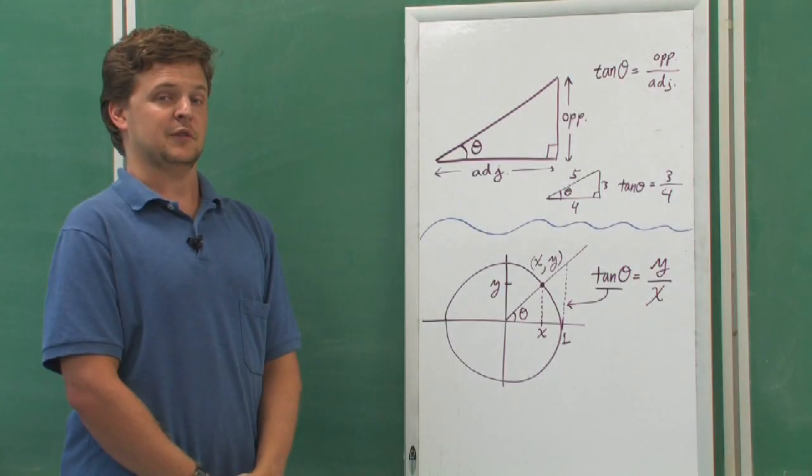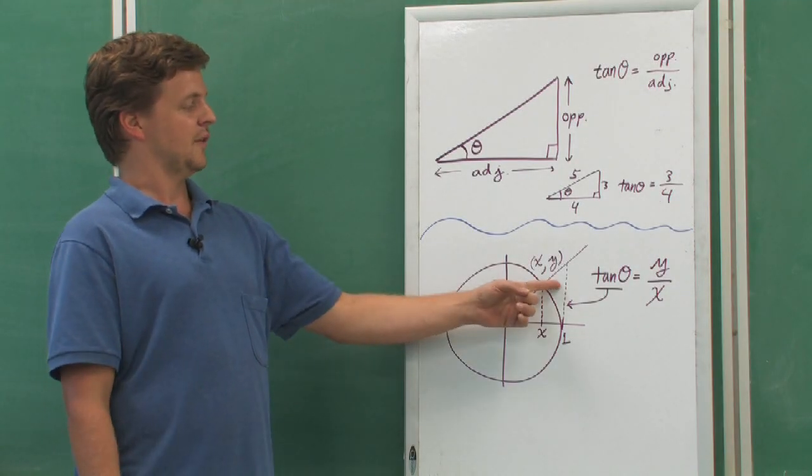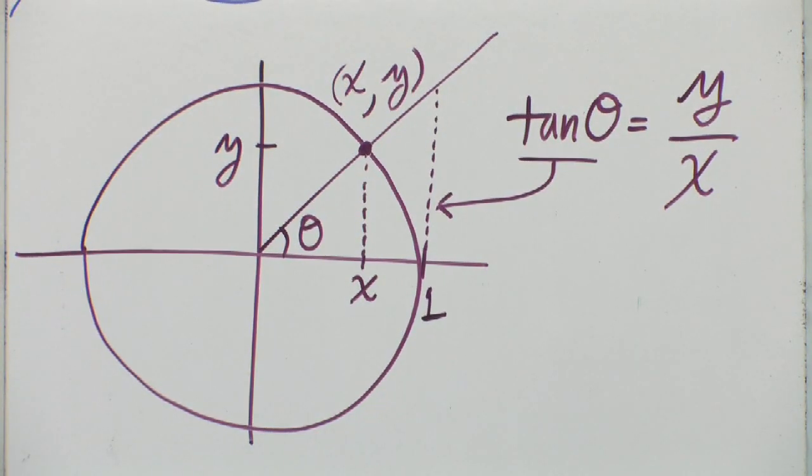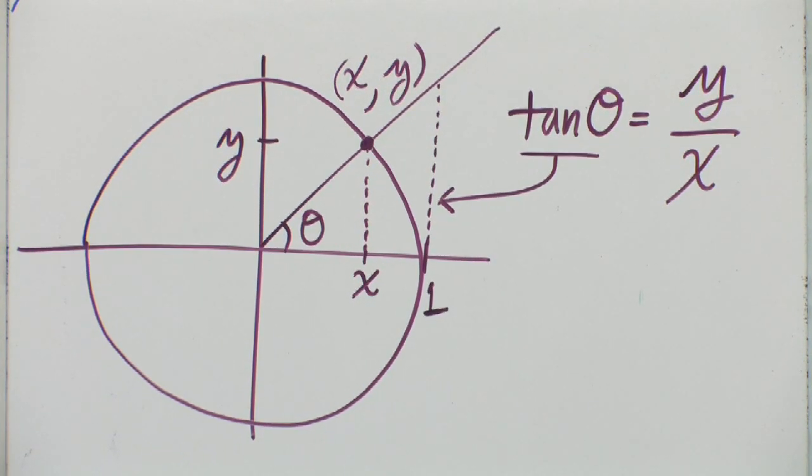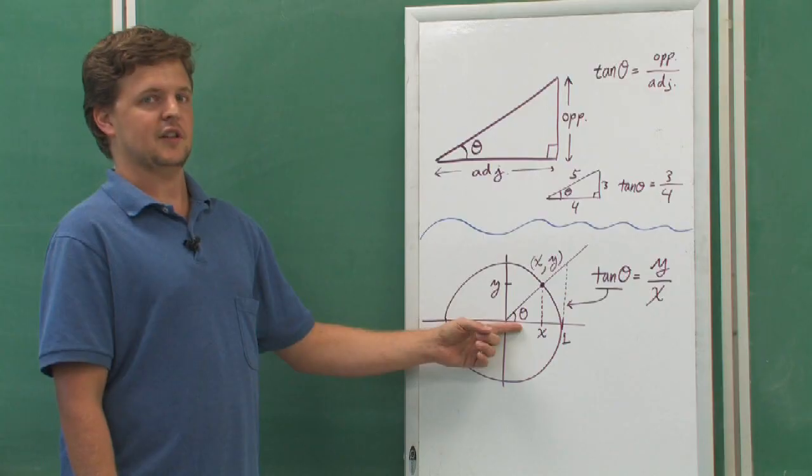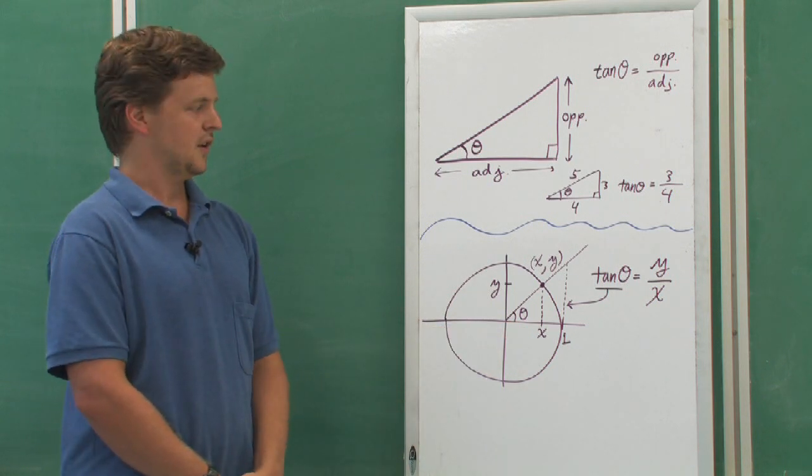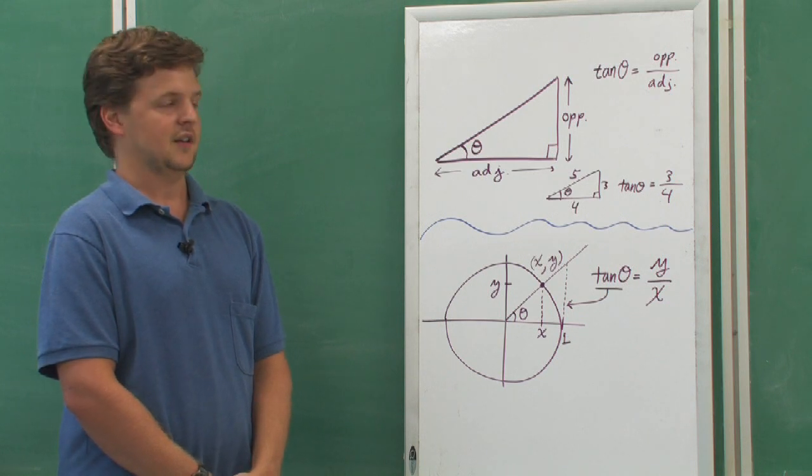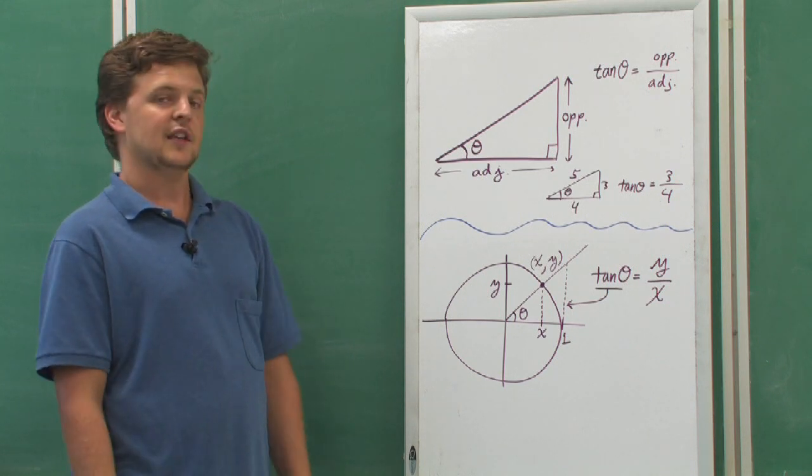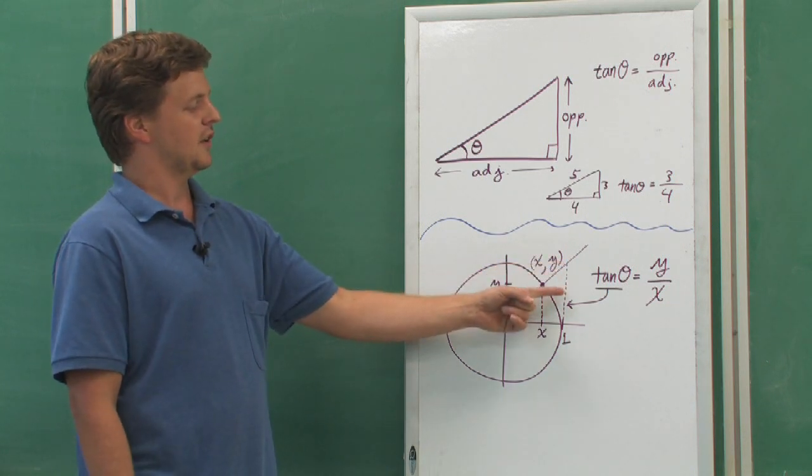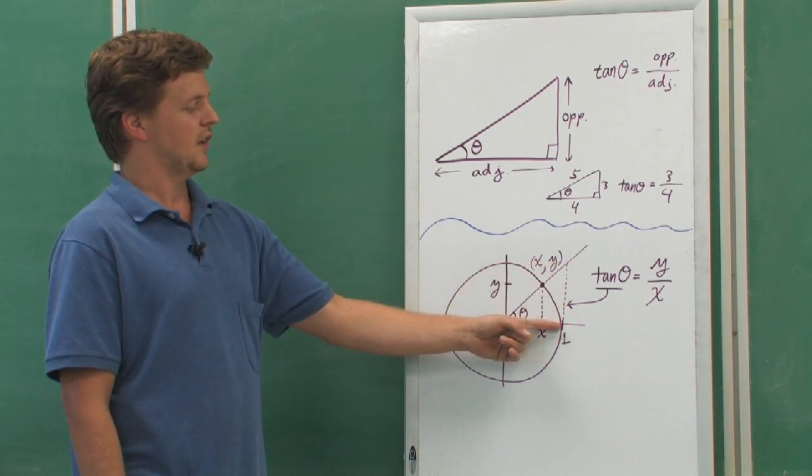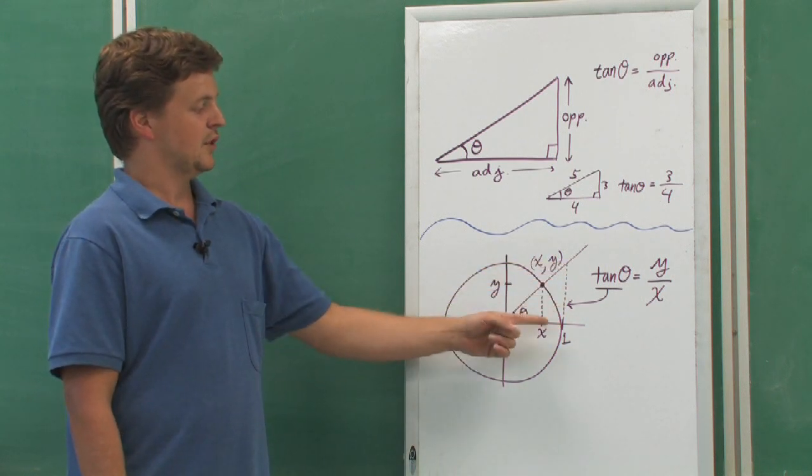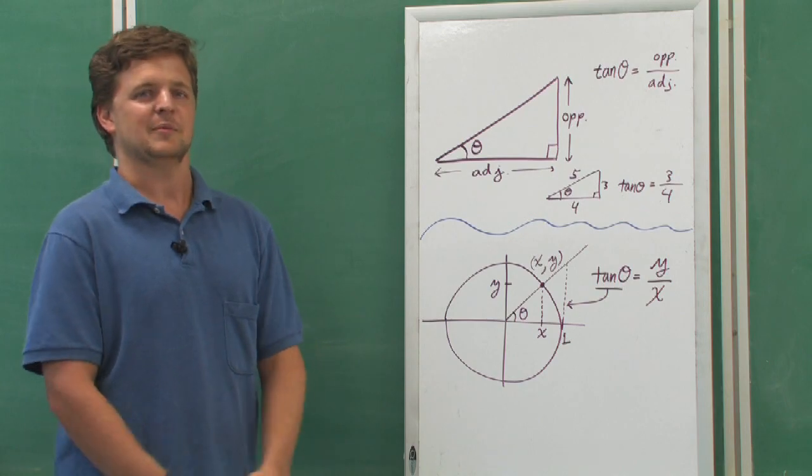Notice what happens if I decide to use the bigger triangle. Now, the adjacent side is the radius of the circle of length 1. So when I divide by 1, I get exactly what I started with. In other words, tangent of theta is precisely the length of this vertical line. That's the line which is tangent to the circle, hence the name tangent.